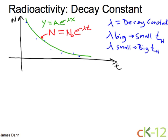Well, let's find the half-life from the decay constant. So find half-life from decay constant. Well, we can do that by using the function N equals N naught e to the minus lambda t.